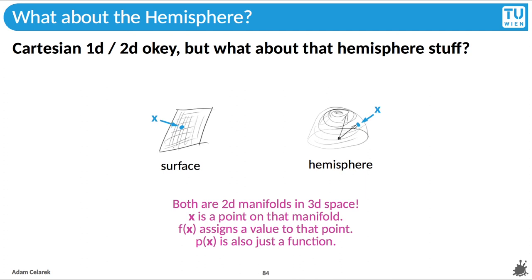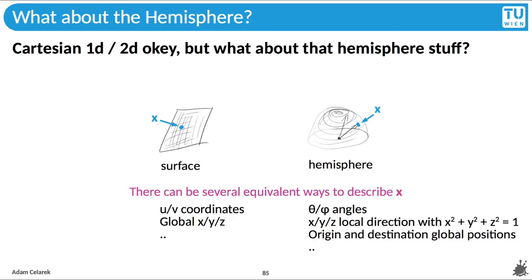Let's say we have a point x on that manifold. We can have a function f that assigns a certain value to the point. The pdf is also just a function, so that also works. And we can have different systems to describe the point, or its coordinates. For a flat surface, we could have uv coordinates, or global x, y, z coordinates, or other options. For the hemisphere, we could have two angles, theta and phi, or we could have a local vector x, y, z with a length of 1, so that we stay on the manifold, or we could have the origin of the hemisphere and another point in space and define the point by intersection, a vector of length 1, which is pretty similar to the second description method, actually. This is just to paint a picture.